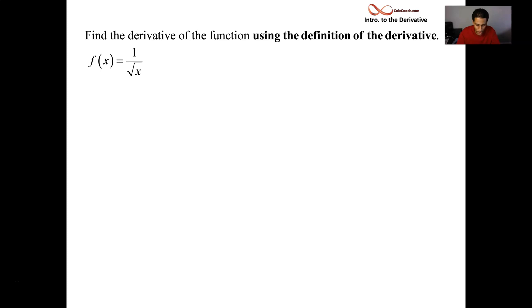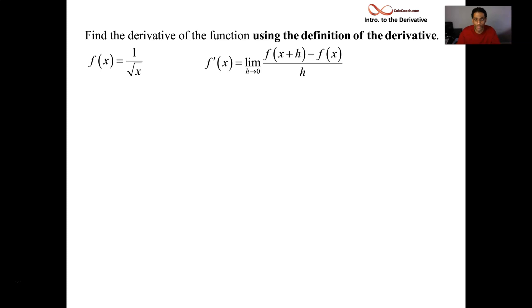So 1 over root x — it's a simple function, and we're interested in calculating its derivative using the definition. f prime of x is equal to the limit as h goes to 0 of f of x plus h minus f of x, all divided by h.